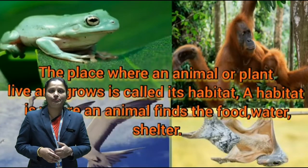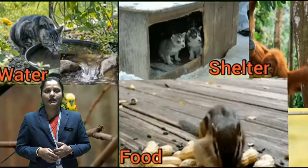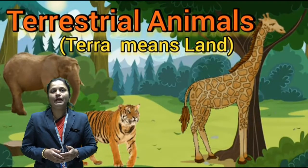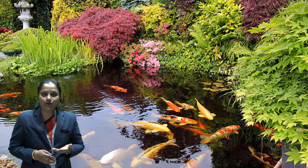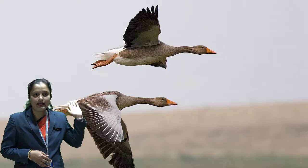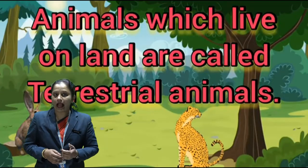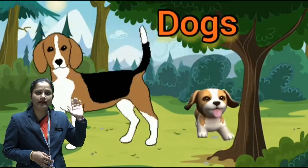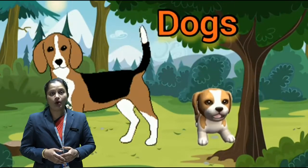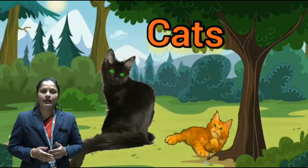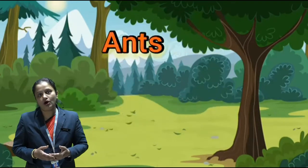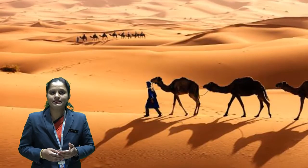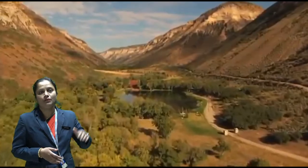To thrive. Students, there are mainly three types of habitats. They are terrestrial, aquatic and aerial habitats. Now we will see the first one: terrestrial habitat. They are found on land. They are natural or man-made. For example, desert habitats, grassland habitats, and forest habitats.